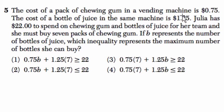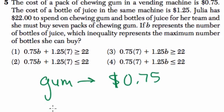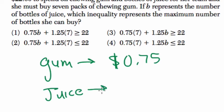The cost of a pack of chewing gum is 75 cents. The cost of juice is $1.25. Alright, so I'm going to slow myself down. I tend to rush. I'm going to write this down. So we've got gum and the gum is 75 cents. Okay, juice is $1.25.